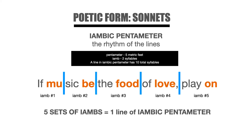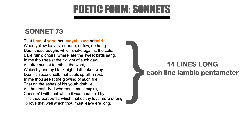If we break this line into syllables, we see we have five sets of iambs. If music be the food of love, play on. Every other syllable has more of a stressed sound to it — that means it's more emphasized when you say it. A complete sonnet is 14 lines long, and each of the lines is written with this kind of rhythm.